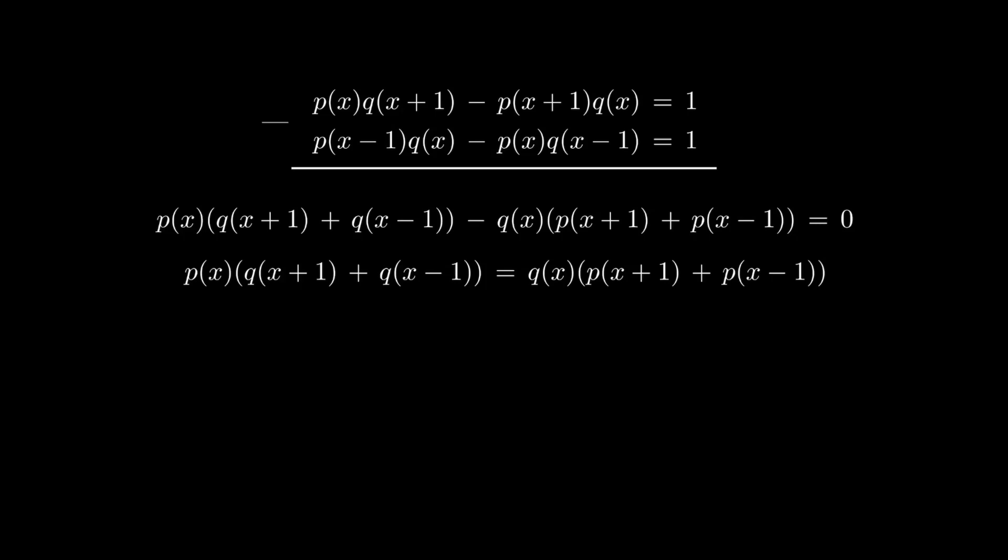Take note of the fact that neither p(x) nor q(x) are identically 0, because otherwise, either way, we will have the left-hand side of the original equation to be identically 0, but the right-hand side is 1, so it's impossible.